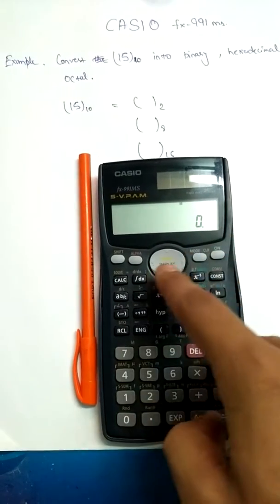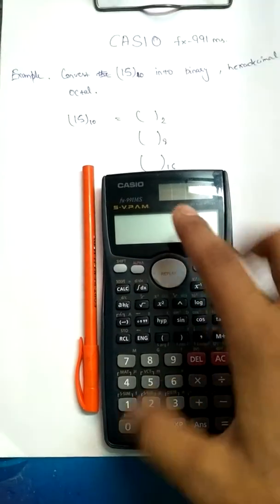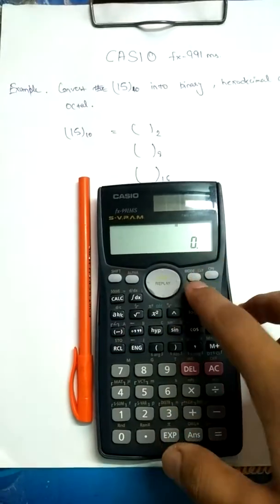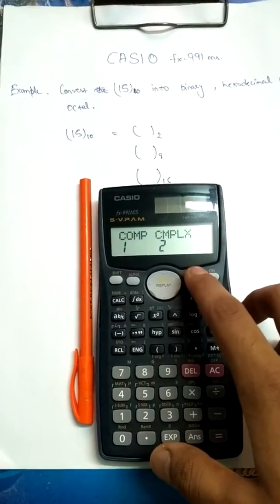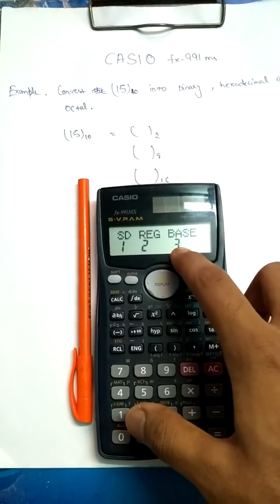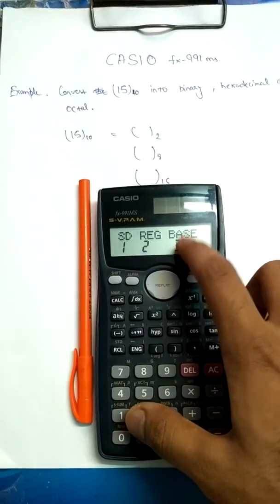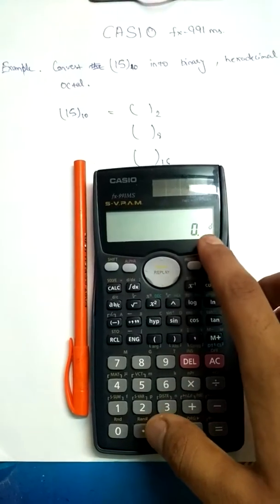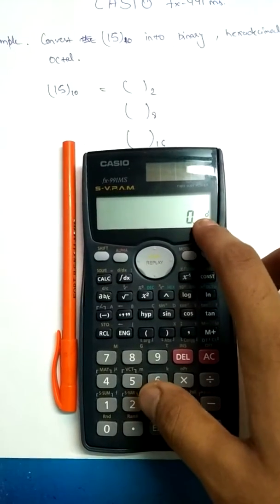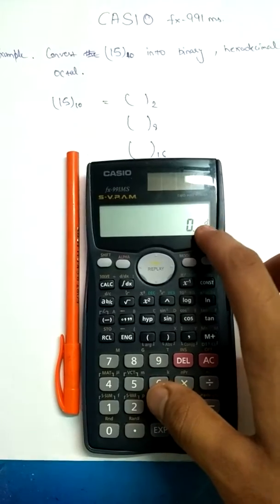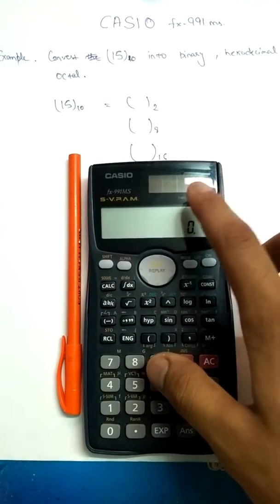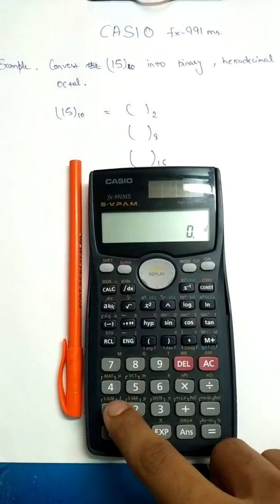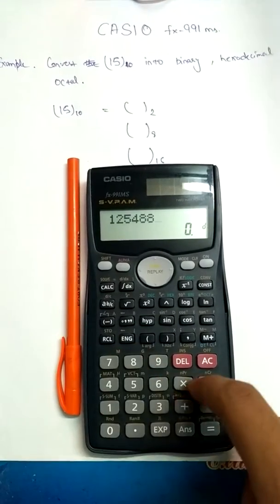Let's switch on this calculator. To get into these modes, I have to press the MODE button two times, then press 3, so that I can go into base mode. You can see the small 'd', which represents decimal.